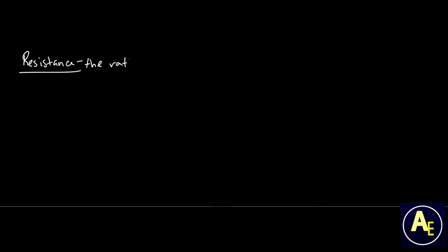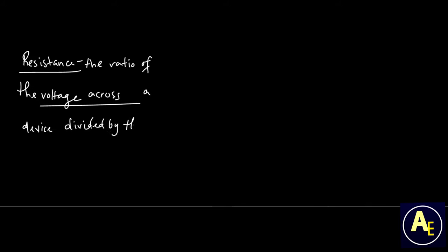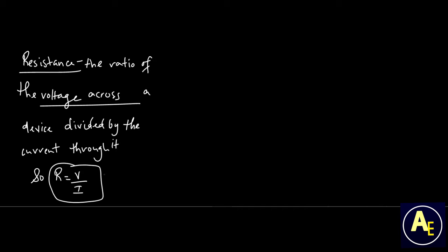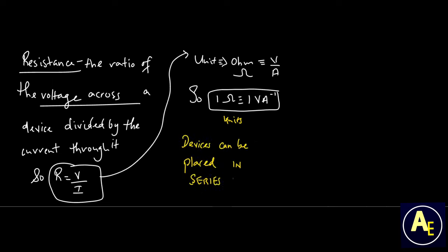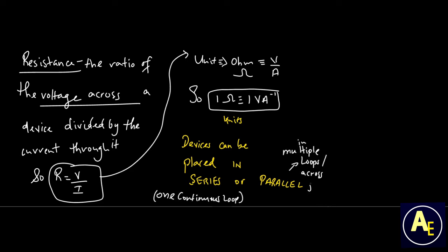Resistance is made up of a combination of both voltage and current. Since voltage is measured across and current is measured through a device, we say resistance is the ratio of voltage across to current through any device or load. The unit of resistance is the ohm, also defined as one volt per ampere. Devices can be placed in series or parallel, which brings us to our main topic: series and parallel circuits.